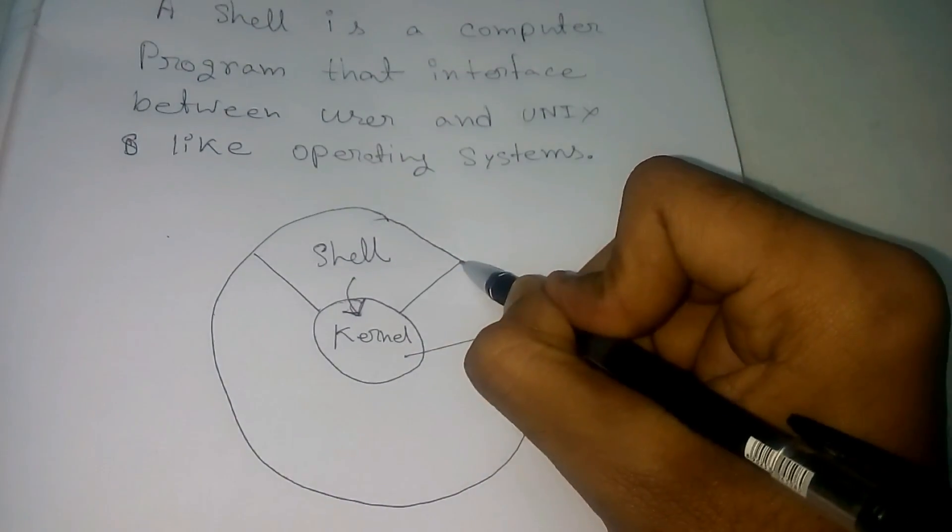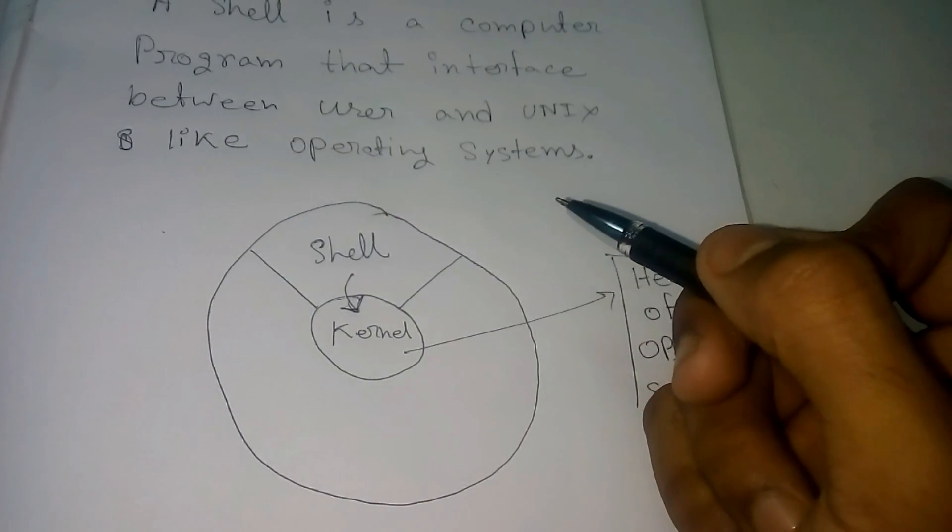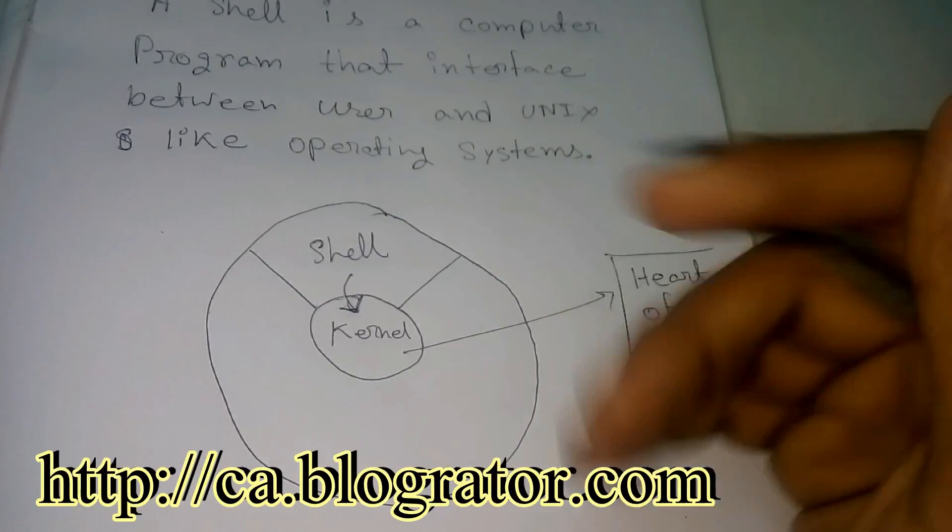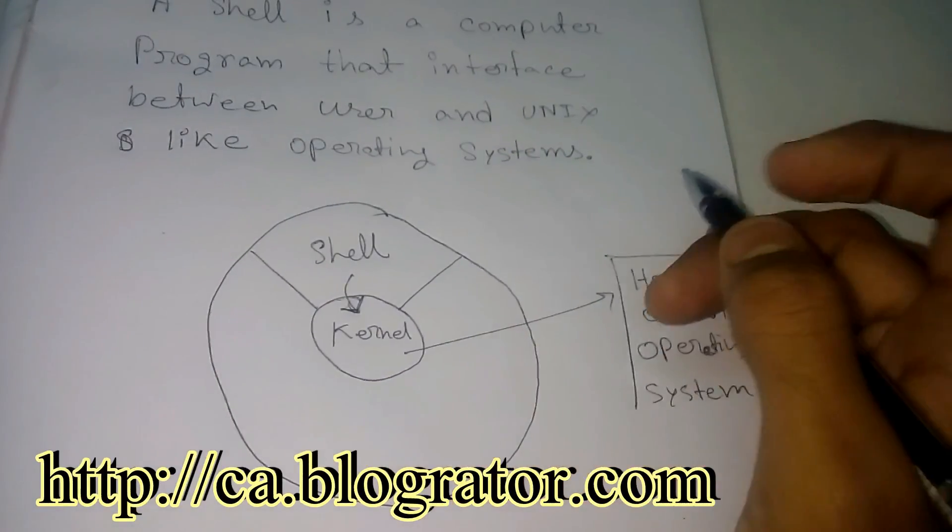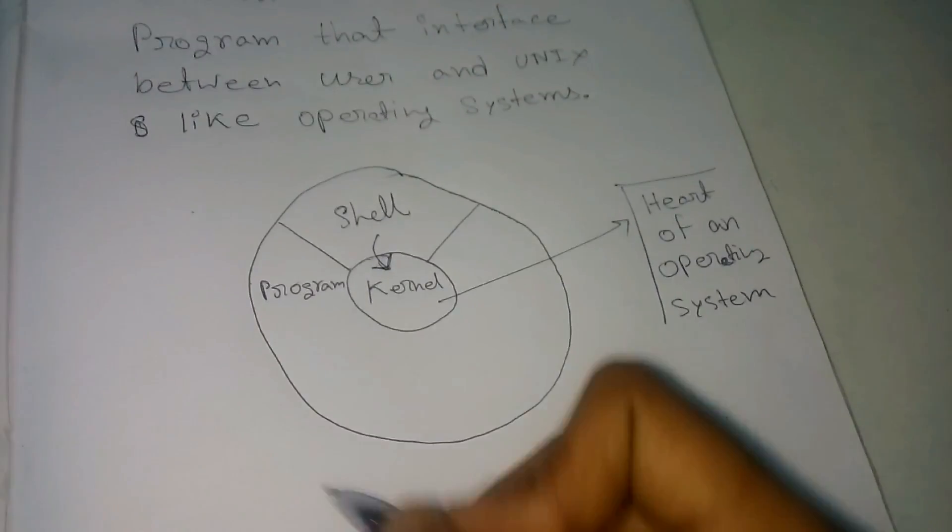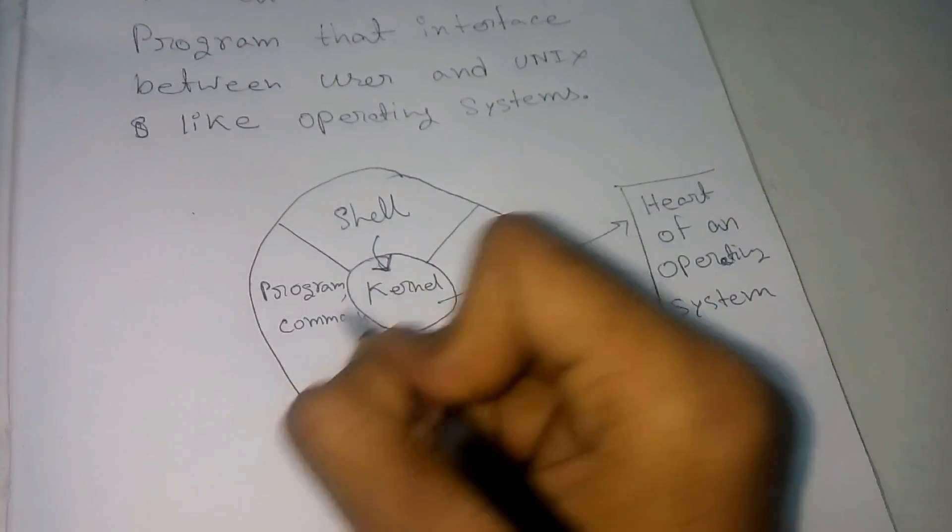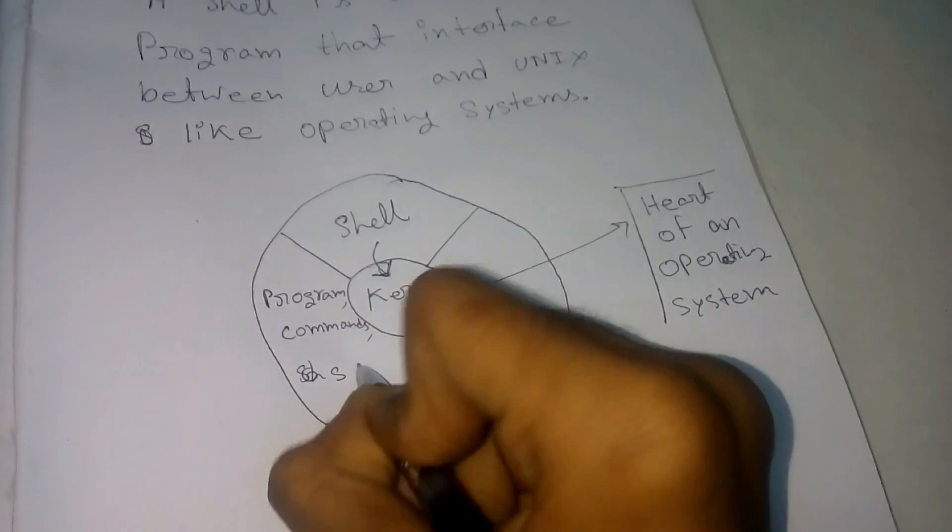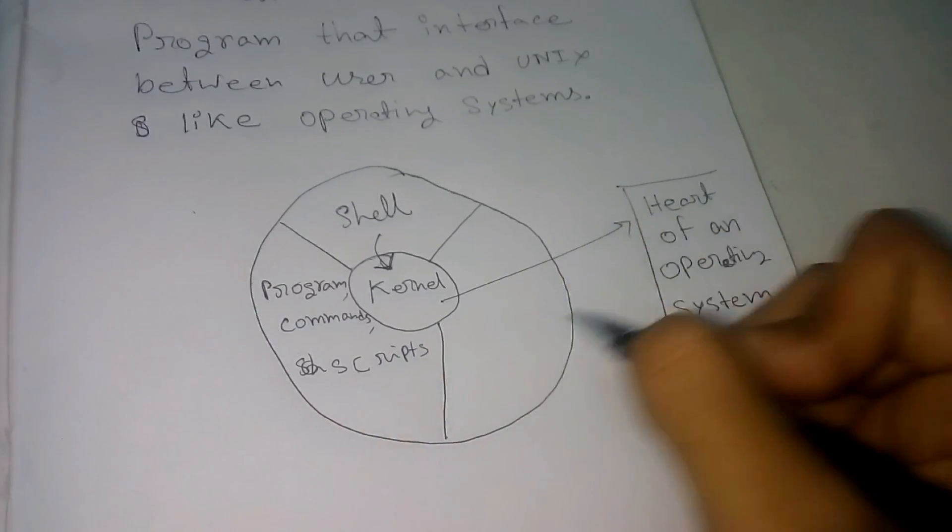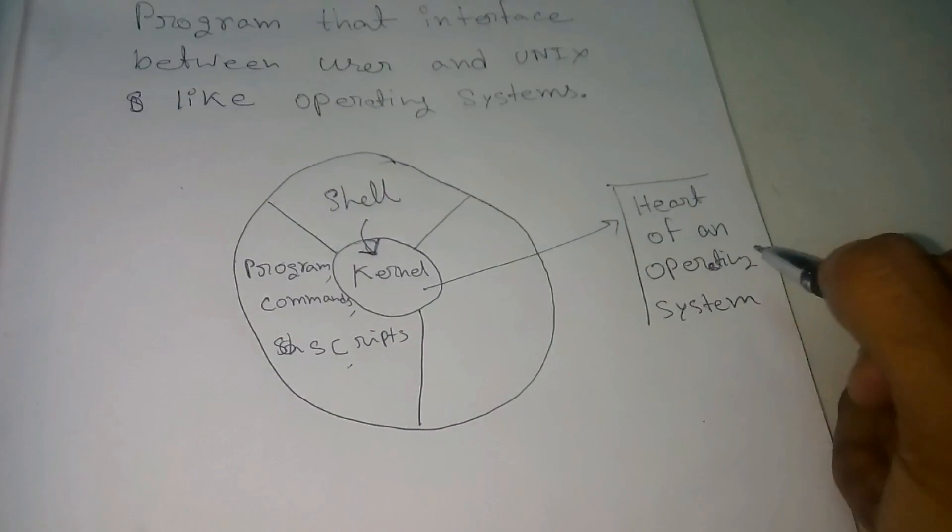In the shell, we can write scripts, programs and commands. With those programs, commands and scripts, we can communicate with the kernel. This is the only way to communicate with a kernel of an operating system.